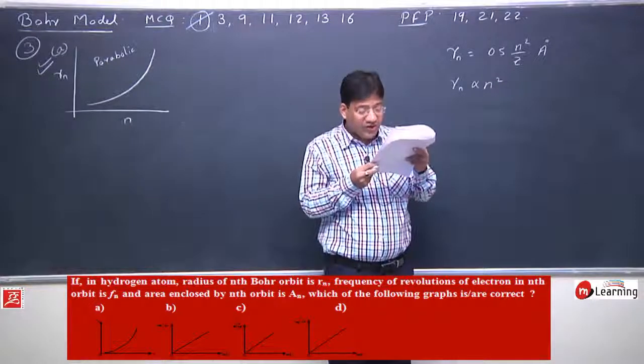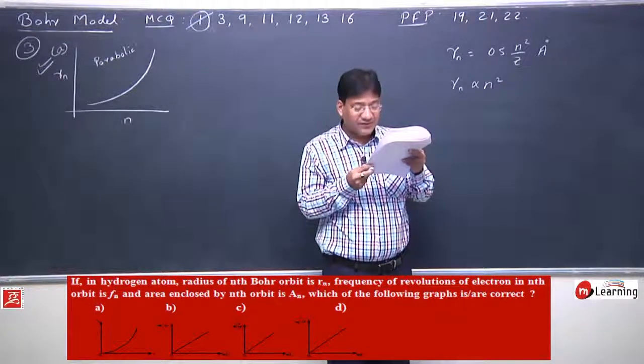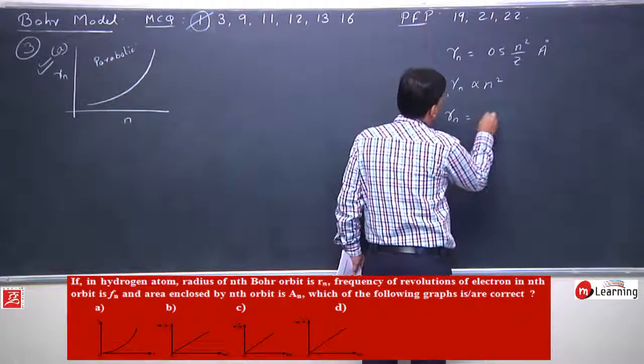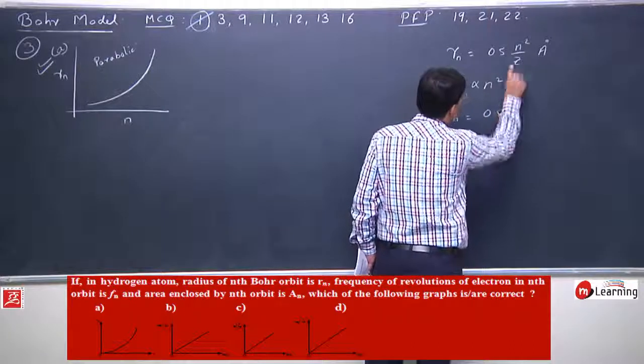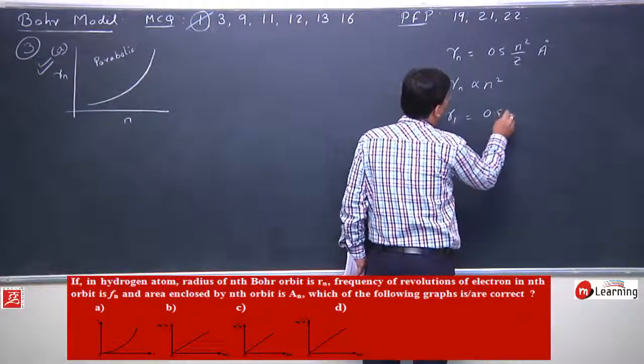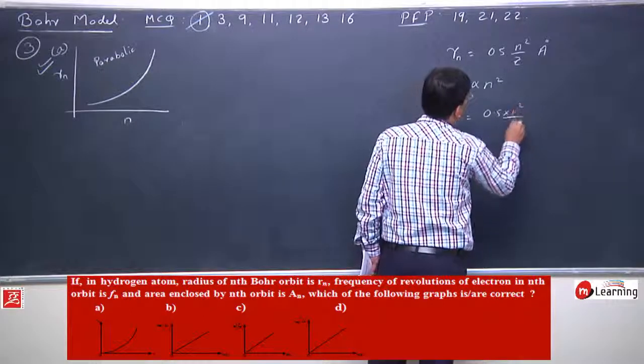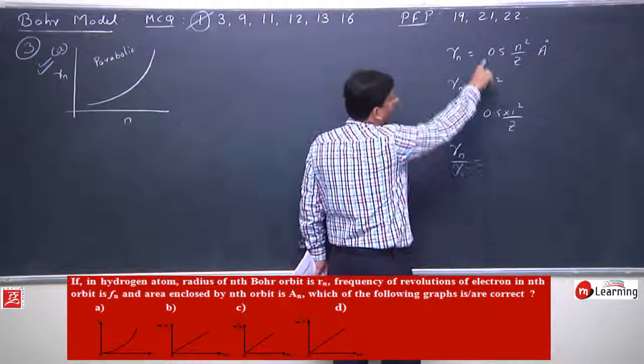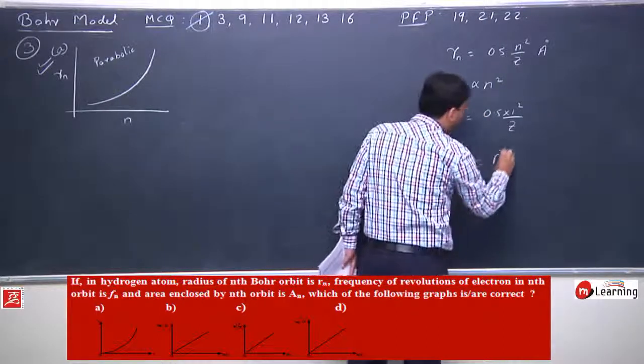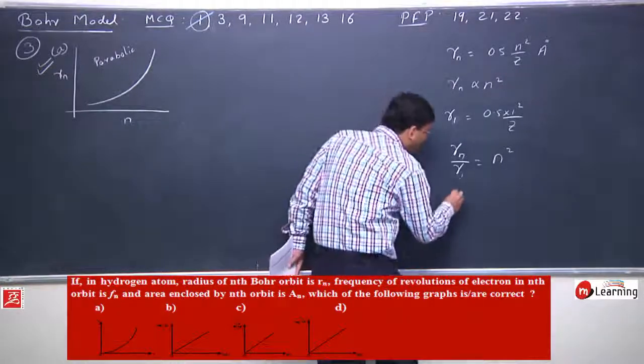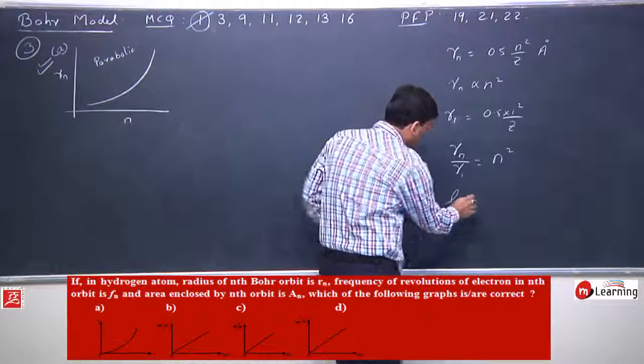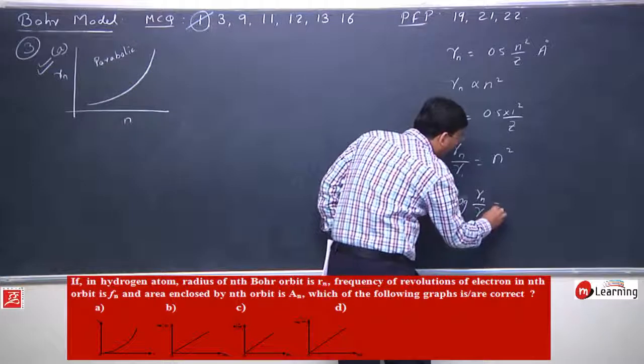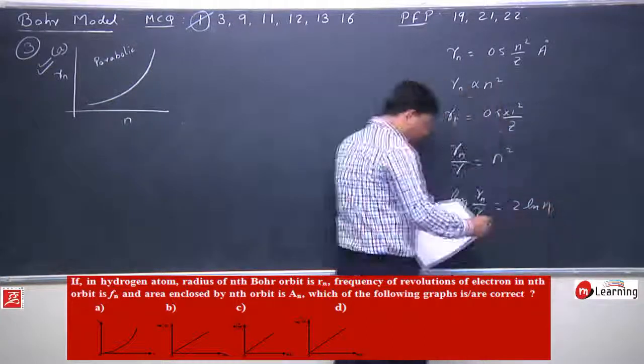Option b is log of rn upon r1 versus log n. So log of rn upon r1 equals 2 log n.